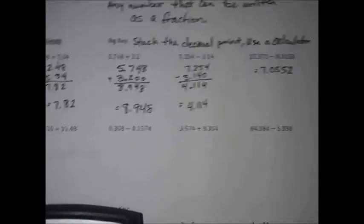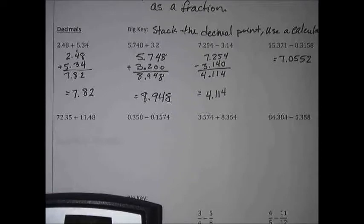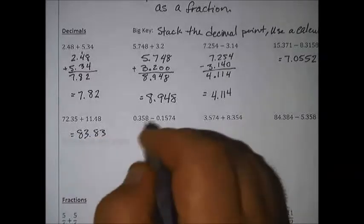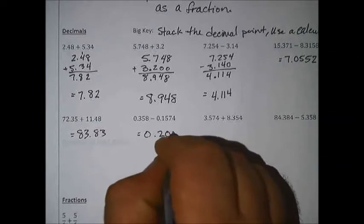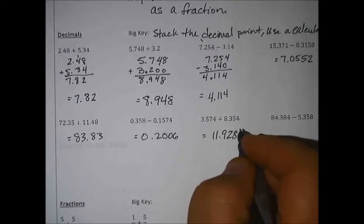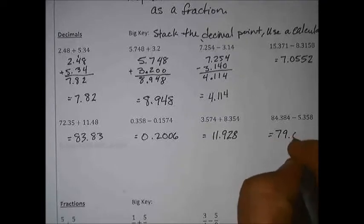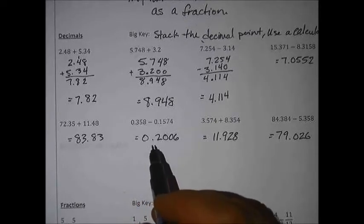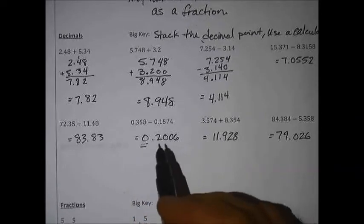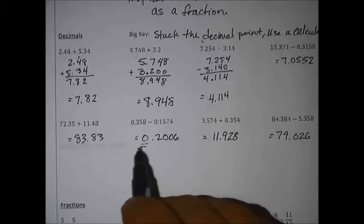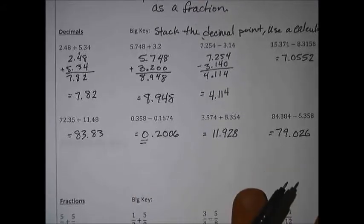Go ahead and pause the video and try the four problems below. Welcome back — hopefully you punched those into a calculator and got: 83.83, 0.2006, 11.928, and 79.026. One thing to point out: anytime I have a zero in the whole number spot, I will always write that zero — because without it I might think 0.2006 is actually 2006. Write that zero; it makes life a lot easier.